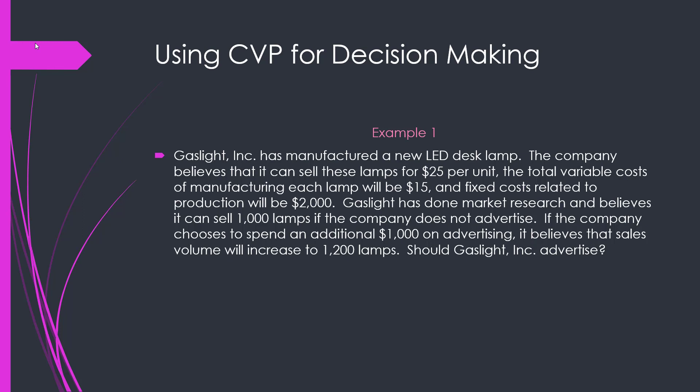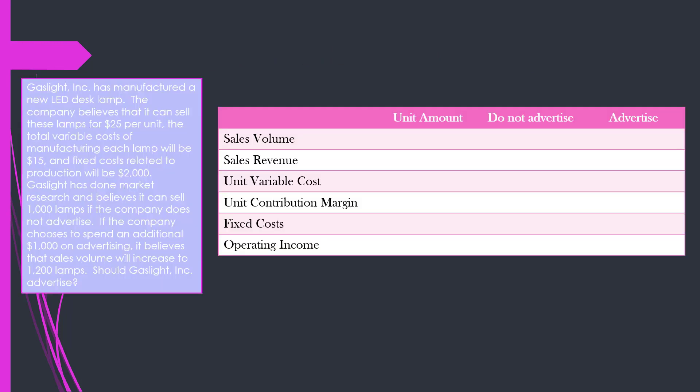Should the company put these lamps onto the market without advertising and sell 1,000 of them, or should they spend the additional $1,000 to sell 1,200 lamps? Gaslight can figure out what they should do by determining which plan is going to give us the highest operating income.